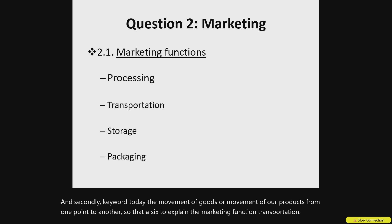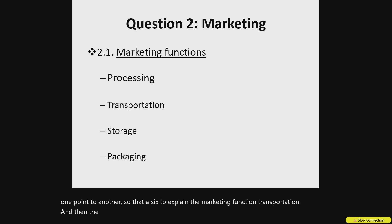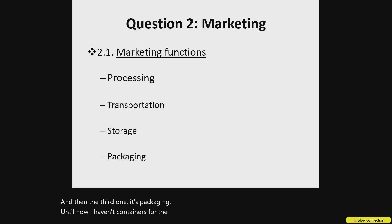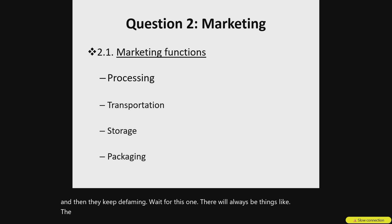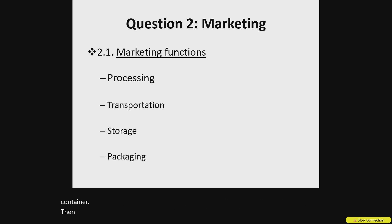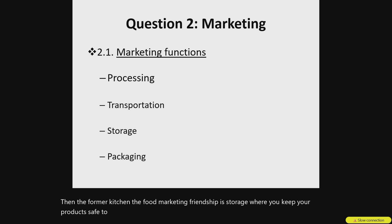The third function is packaging, where we are having containers or a box — you are trying to contain your agrik produce there. The key defining words for this one will always be things like the guidelines when you are packaging your product, as well as the design features for your container. The fourth marketing function is storage, where you keep your products safe to prolong their shelf life, such as using refrigerators.